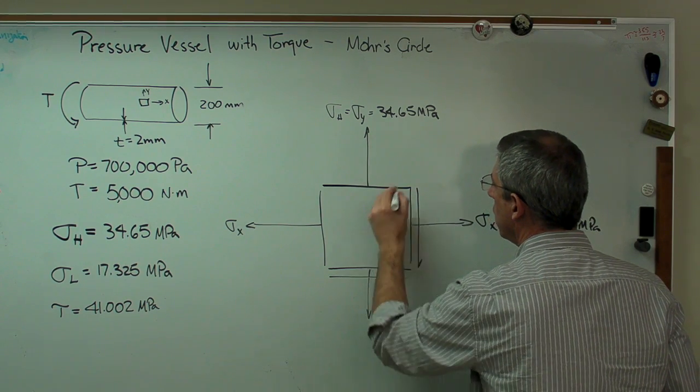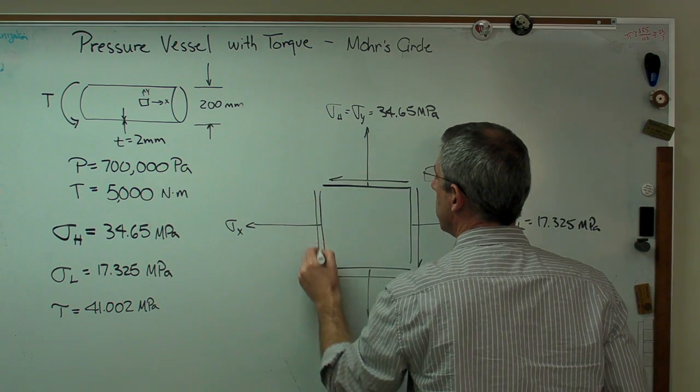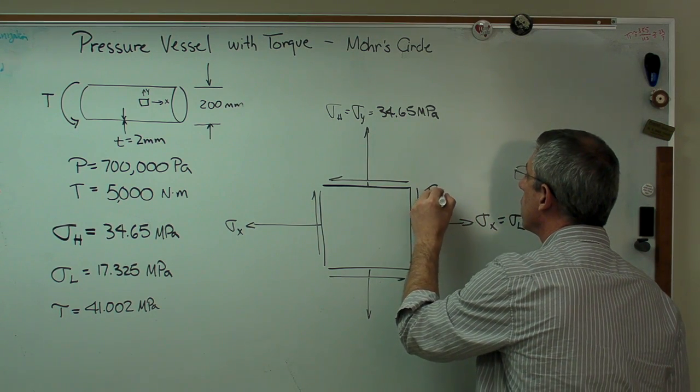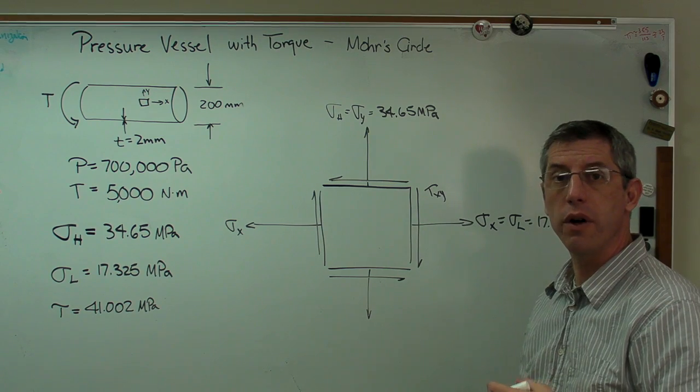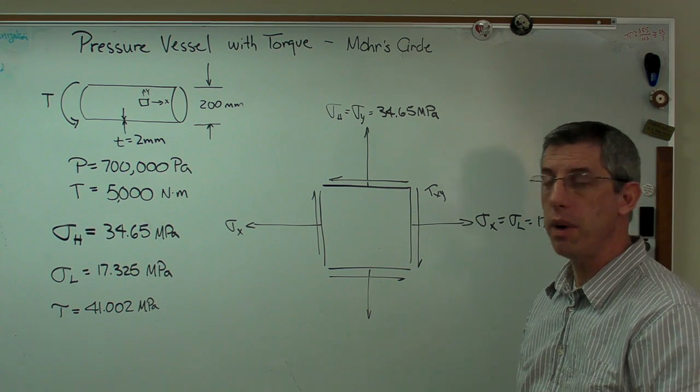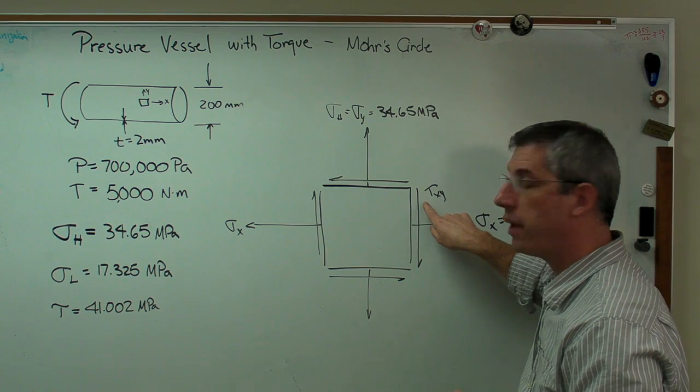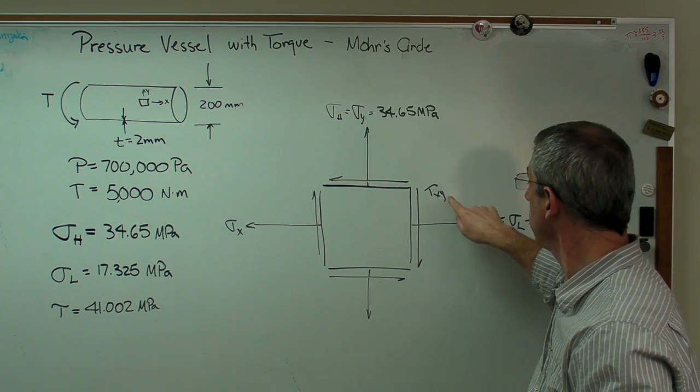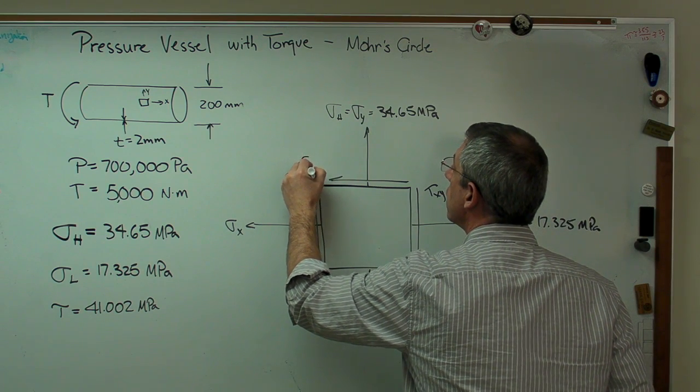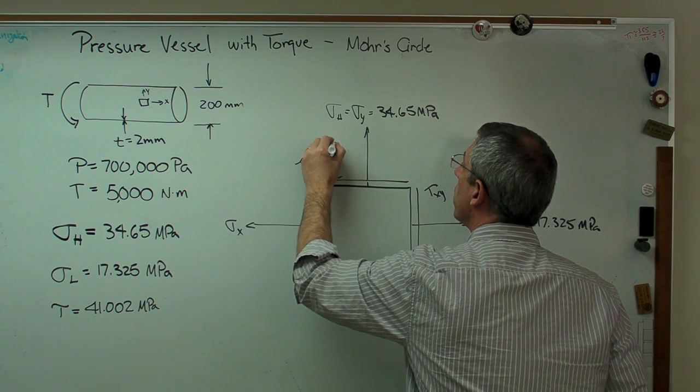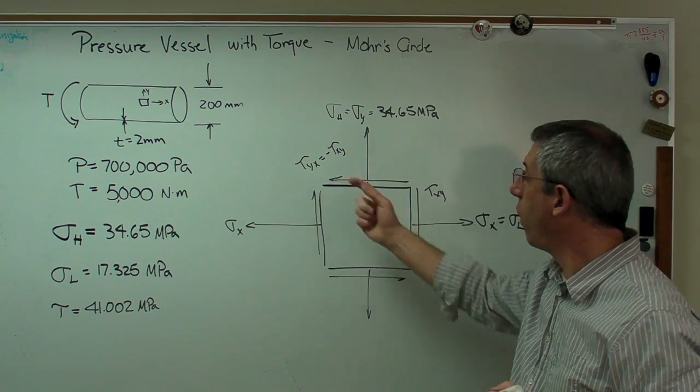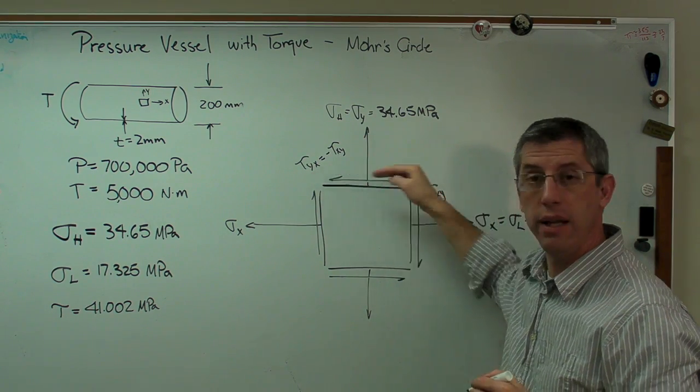And every stress element can have shear stresses on it. Now here's, on this face we call that tau xy. Now it's just a naming convention. But the way to remember this is this is shear stress on the x face in the y direction. Tau yx, by the way, is minus tau xy. But this is stress on the y face, right here, in the x direction.